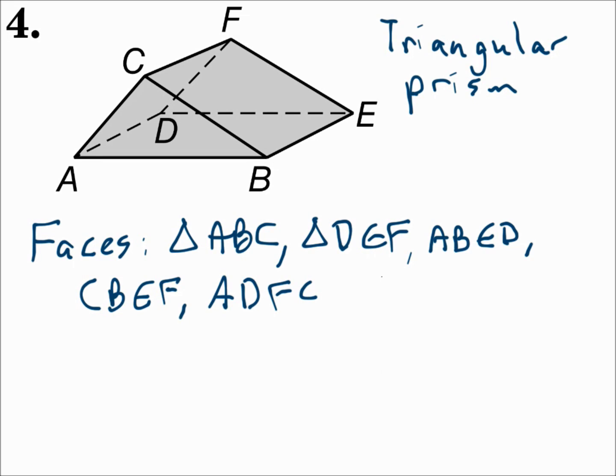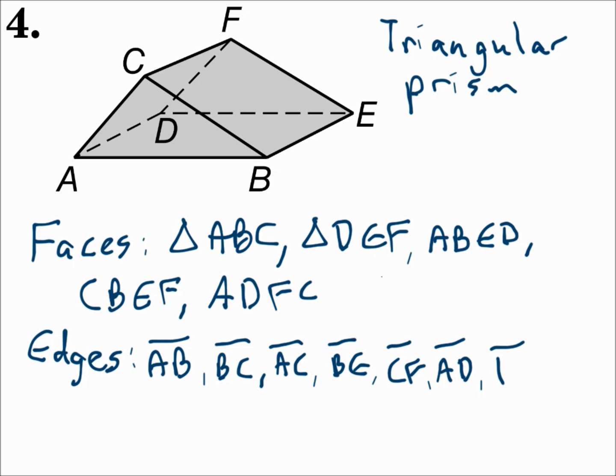The edges are the segments. There are nine of them. In the first triangle, segment AB, segment BC, and segment AC. Going around the middle, segment BE, segment CF, and segment AD. And in the far triangle, segment DE, segment EF, and segment DF.